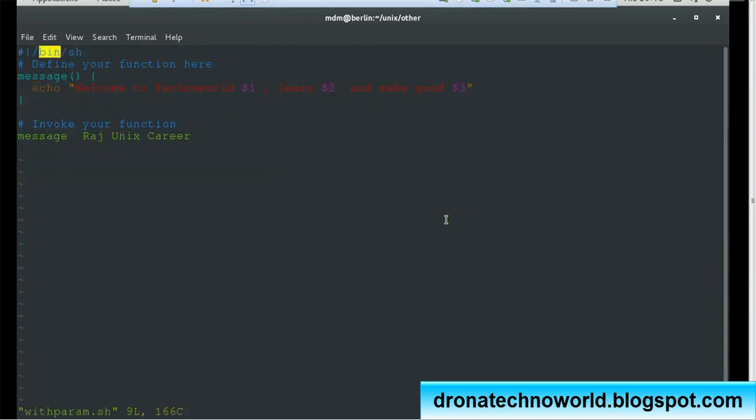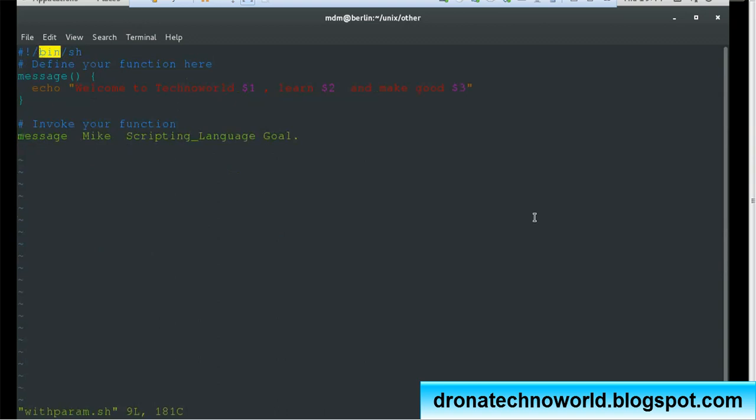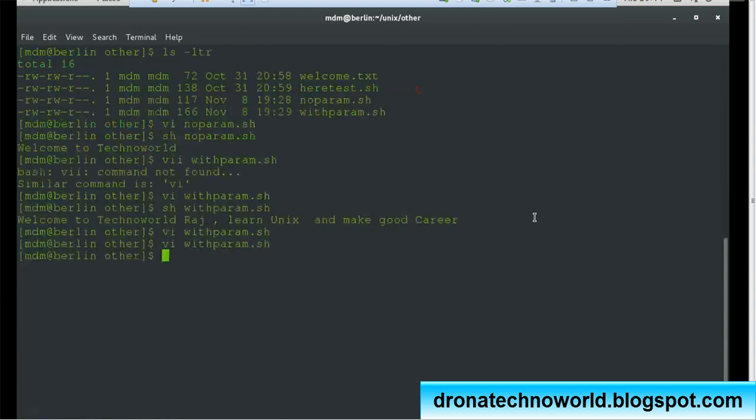If you want to change some values, let's do that. I'll just modify—instead of Unix, you can mention 'scripting_language'. Let's try this. I use some special characters like underscore dot. Let's see how it works. Save it with :wq. You can just verify it's correct.